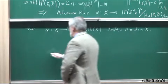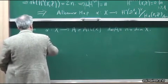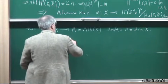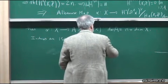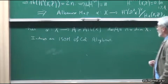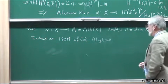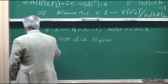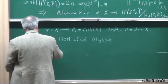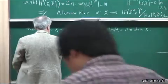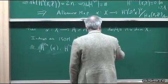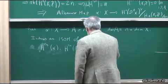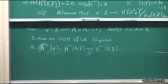The Albanese map induces an isomorphism of cohomology algebras. So the degree of the map — since α*: H_{2N}(A, Z) → H_{2N}(X, Z) is an isomorphism — means the map has degree one. And so α is surjective.